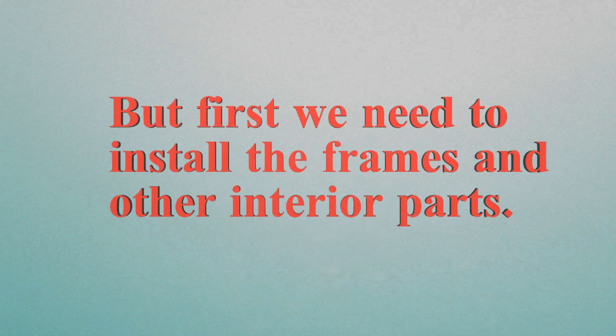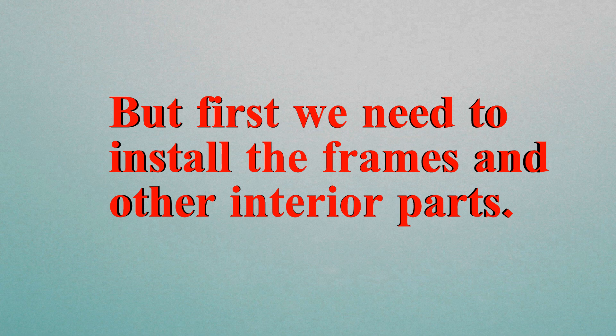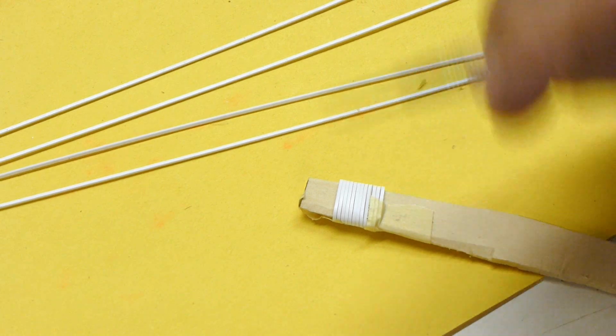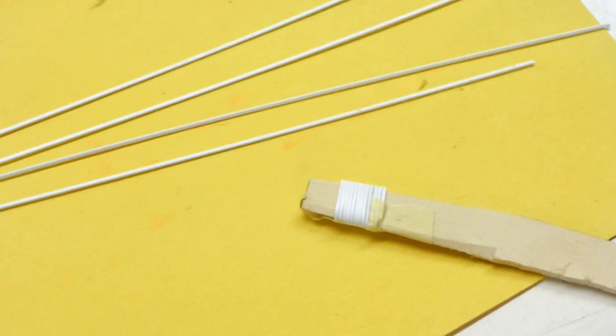But again I'm jumping ahead, so let me come back and show you how I made the frames for the hull. I used some 40 mil by 40 mil square pieces of styrene.